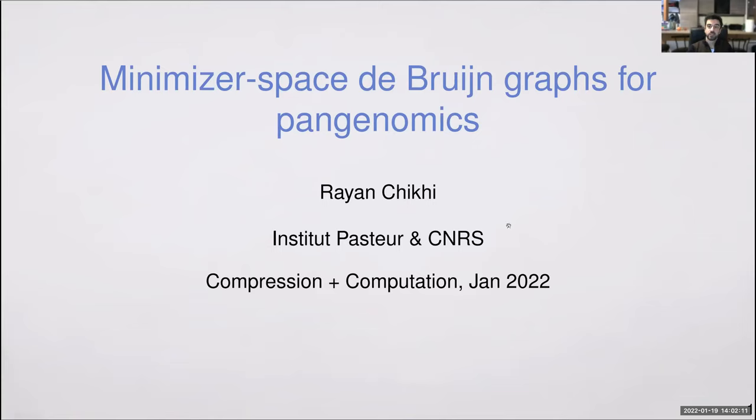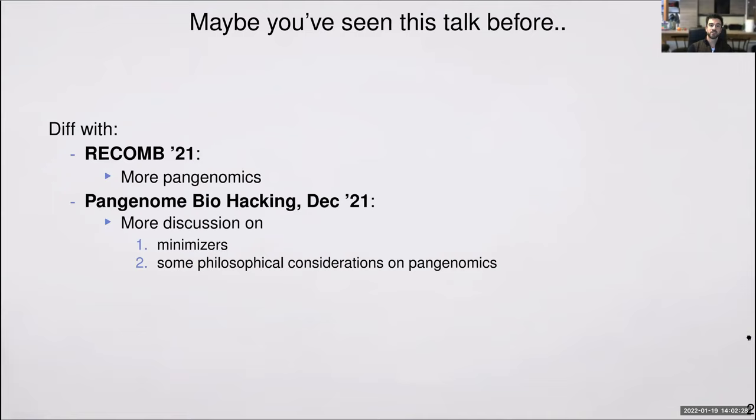This talk is on minimizer space and growing graphs for pangenomics. Hi Rob. It's very nice to see so many familiar names in the audience. Maybe you've seen this talk before because it was presented by Barish Akim at RECOMB 2021. The diff with today is that we'll talk much more about pangenomics aspects, and more on minimizers and some philosophical considerations.